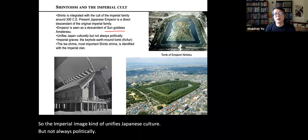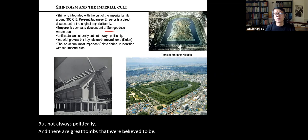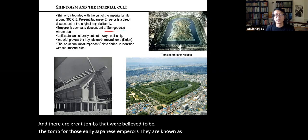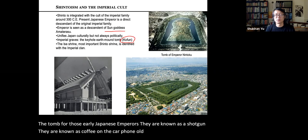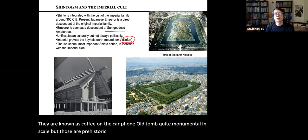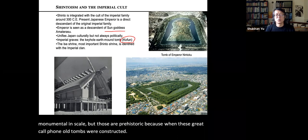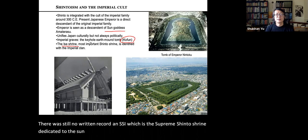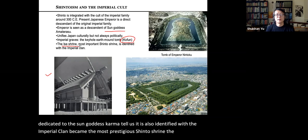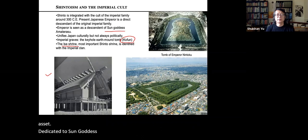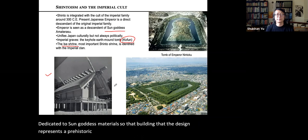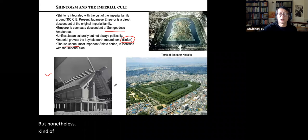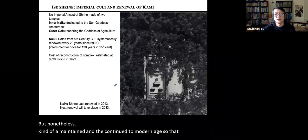There are great tombs believed to be for early Japanese emperors, known as kofun — great coffin tombs, quite monumental in scale. These are prehistoric because when they were constructed there was still no written record. The Ise Shrine is the supreme Shinto shrine dedicated to the sun goddess Amaterasu and is identified with the imperial clan, making it the most prestigious Shinto shrine, located at Ise.